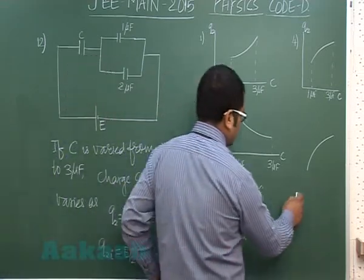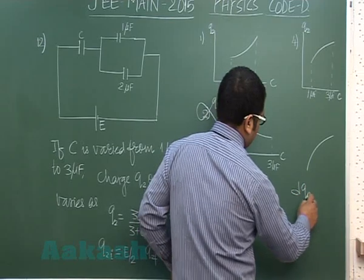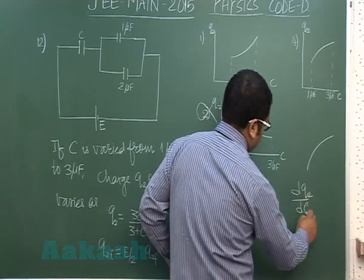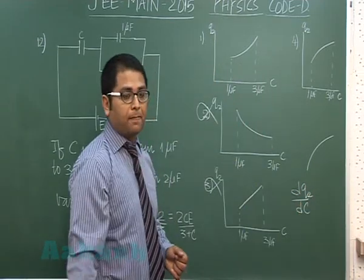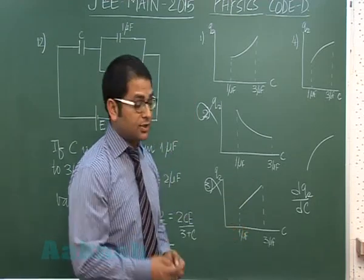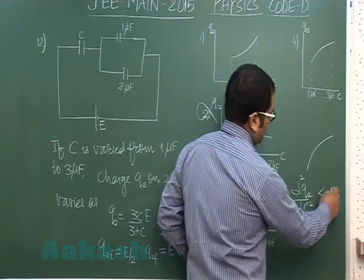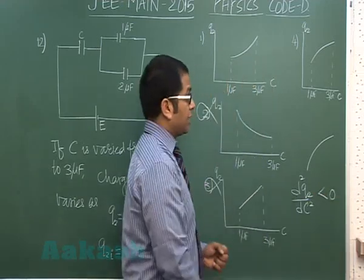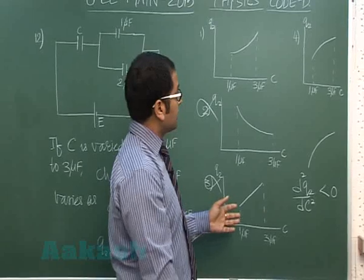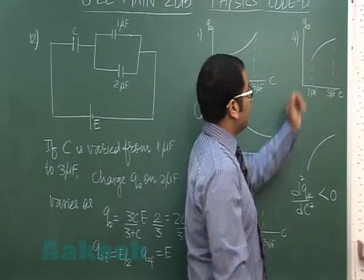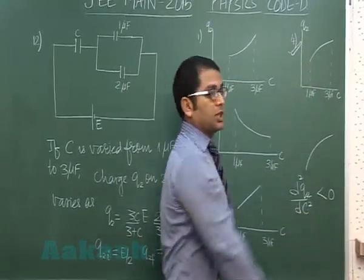So if I calculate the second derivative dq₂/dC, that's the first derivative, that would come positive of course because the charge is increasing. And the second derivative will come out to be negative. And if the second derivative is negative, quite obviously it has to be concave down, so that will lead me to option number 4.